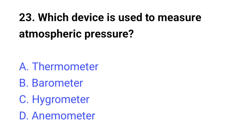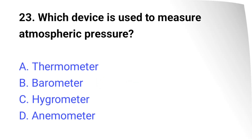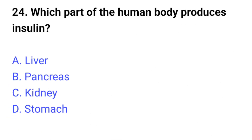Question number twenty-three: which device is used to measure atmospheric pressure? The right answer is option B, barometer. Question number twenty-four: which part of the human body produces insulin? The right answer is option C, pancreas.